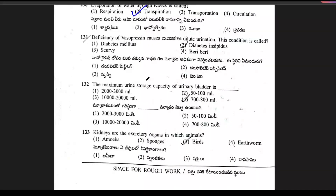Question 131: deficiency of vasopressin causes excessive dilute urination. What is this condition called? It is nothing but diabetes insipidus.